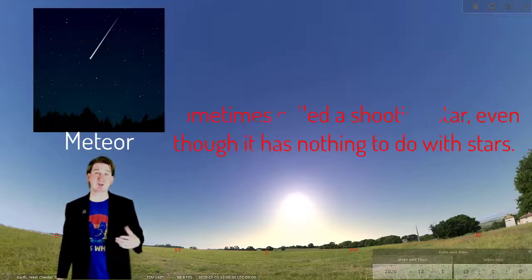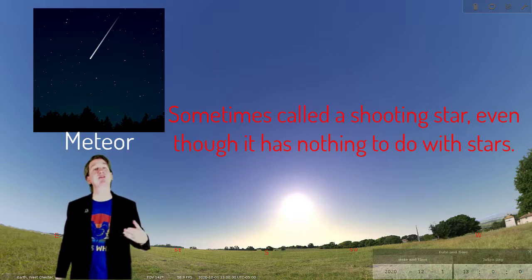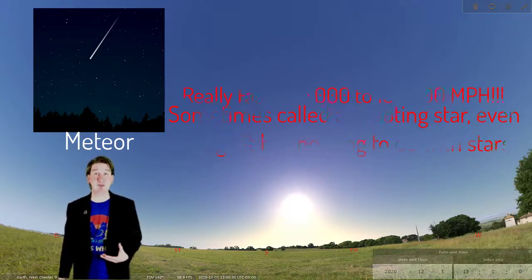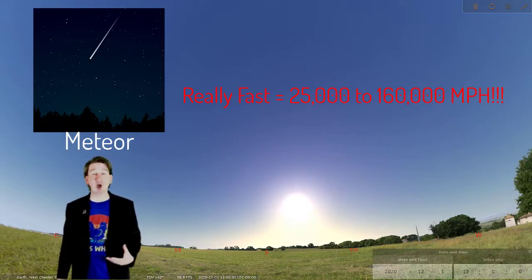A meteor, sometimes called a shooting star, is the light produced in Earth's atmosphere when a meteoroid hits it at really fast speeds, and heats up the air so much that it glows.